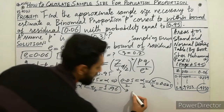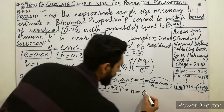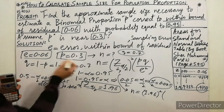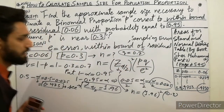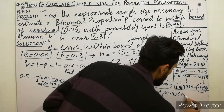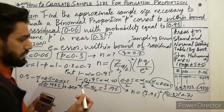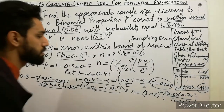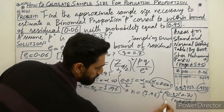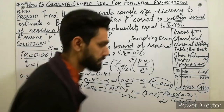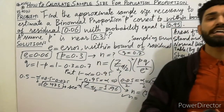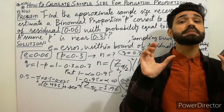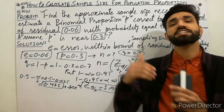Now put all the values into the formula: n is equal to z alpha by 2 which is 1.96, completing the square, times PQ divided by E square. P is 0.3, Q is 0.7, and E is 0.06, completing the square. You can easily calculate the sample size yourself. I hope you have gained a lot of points and concepts. Thanks for watching the video. If you like this video, please subscribe to my YouTube channel and press the bell icon for notifications of my new lectures. Goodbye.